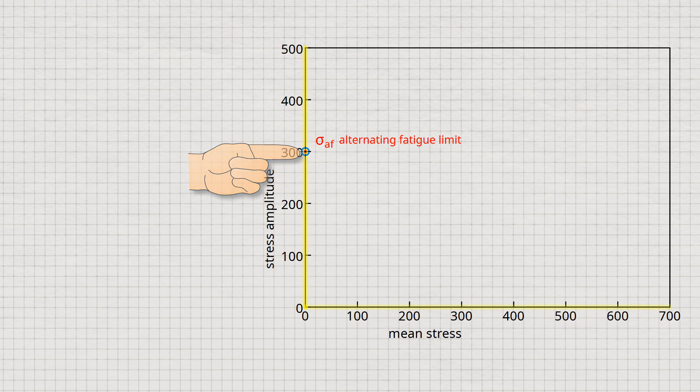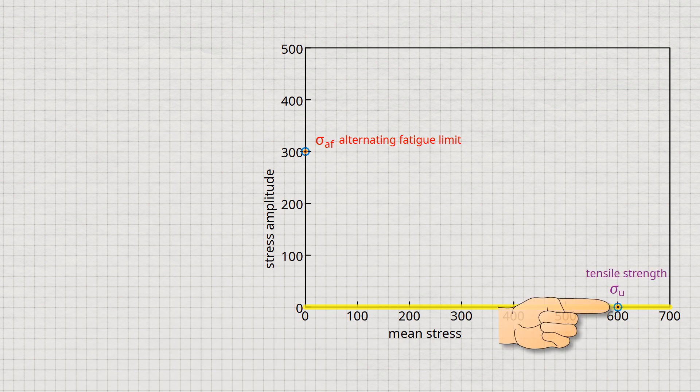If a stress amplitude of zero is chosen instead of a mean stress of zero, this allows another point to be defined. Without a stress amplitude, it is in principle a static load. In this case, the specimen would break due to the applied mean stress alone — the tensile strength would just be reached. Therefore, another point can now be plotted in advance on the horizontal axis.